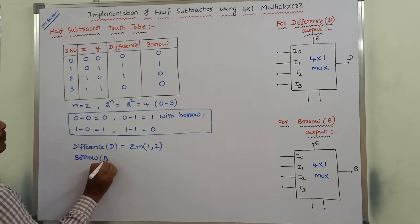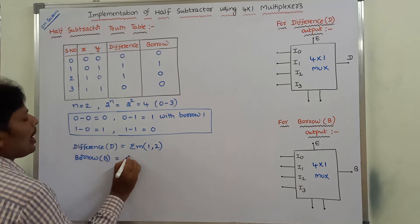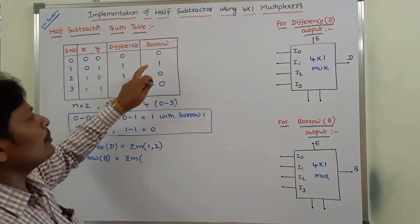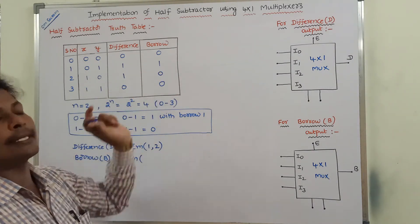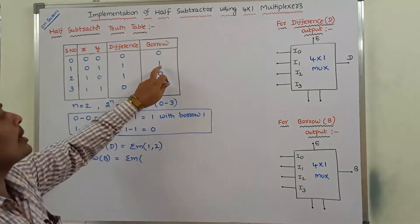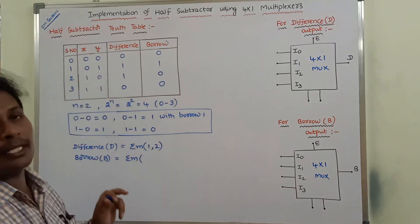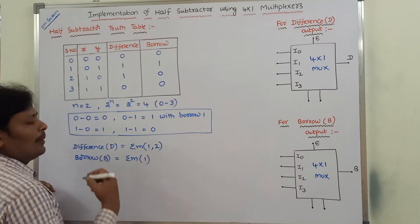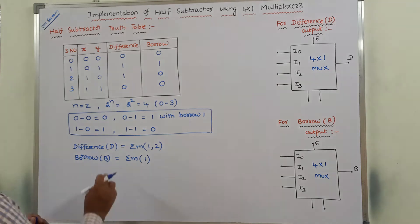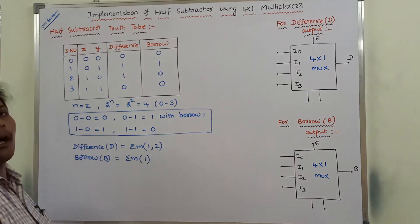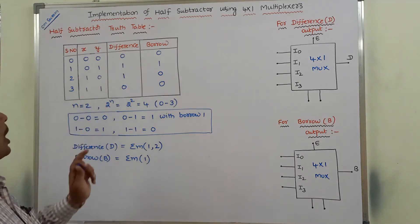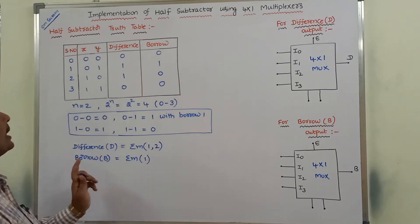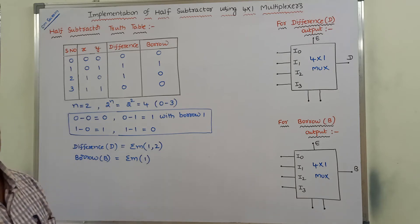Borrow output can be represented in the form of sum of minterms. Now, observe the borrow column. In that borrow column, wherever the ones are present — here 1 is present — the corresponding input combination is 0,1 and the minterm number is 1. So, we are representing the difference output and borrow output in terms of sum of minterms.